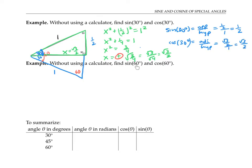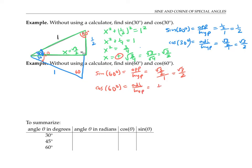To find sine of 60 degrees and cosine of 60 degrees, we can use the same triangle and just focus on the upper corner angle of 60 degrees. Sine of 60 degrees is opposite over hypotenuse, but this time the opposite to this angle is the square root of three over two. Cosine of 60 degrees is adjacent over hypotenuse, which gives us one half.